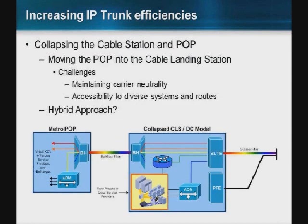The other approach is to go in the opposite direction — build a data center in the cable landing station. A classic issue is that cable landing stations are typically closed environments, so how do you maintain carrier neutrality and access to diverse systems and routes? However, given the limitations on viable landing points, most cable landing points are clustered. So maybe not in the same physical building, but within a few kilometers, you have access to diverse systems — it's just a matter of organizing an approach to gain access and interconnect to those systems to get the diversity you need.